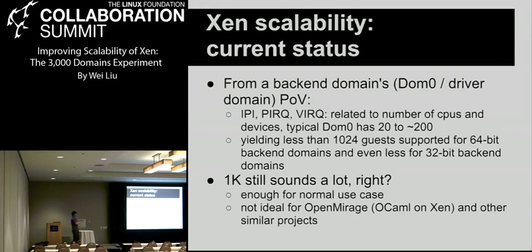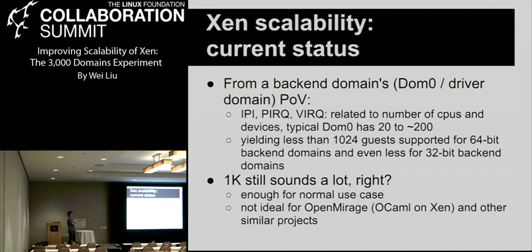From a back-end domain's point of view — like DOM0 or a driver domain — it has its own IRQ, PIRQ, and VIRQ. The number of event channels consumed by these three things is related to the number of CPUs and devices. A typical DOM0 has about 20 to 200 of them. The remaining divided by four yields less than 1,024 guests supported for 64-bit back-end domains, and even less for 32-bit. So 1,000 domains is a big number for normal workloads running dozens or hundreds of domains.